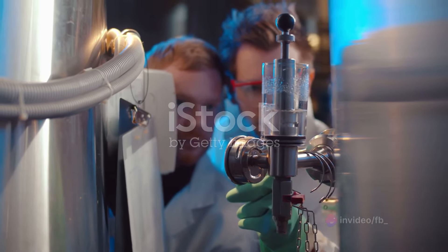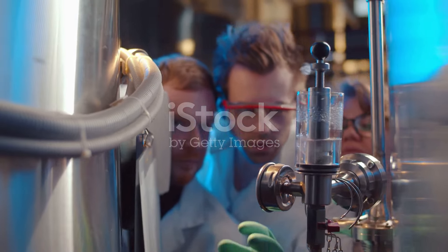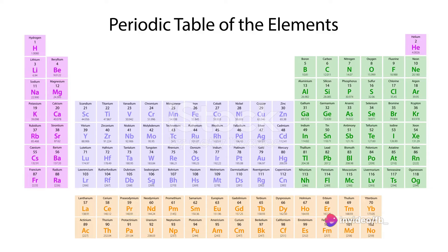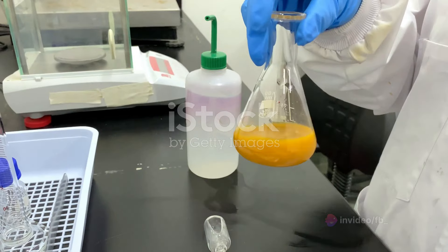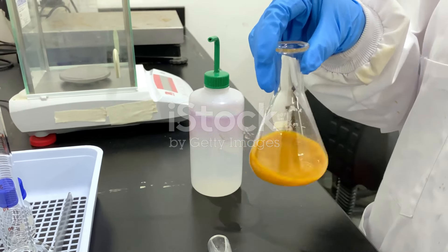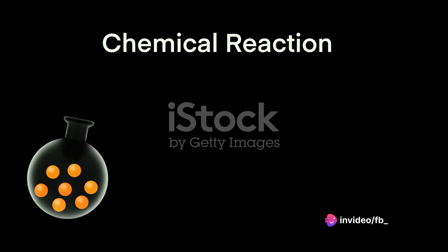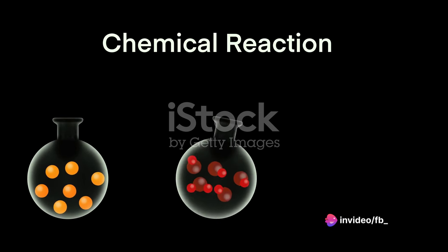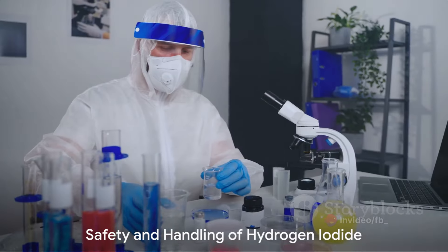Hydrogen iodide is highly reactive and can undergo a variety of chemical reactions. It is commonly used in organic synthesis to introduce iodine atoms into organic molecules, as well as in the production of specialty chemicals. Hydrogen iodide is widely used in the synthesis of organic compounds such as pharmaceuticals, dyes, and perfumes. It serves as a key reagent in many chemical reactions, facilitating the creation of complex molecules.